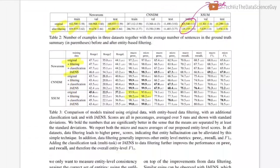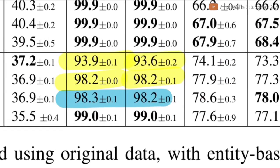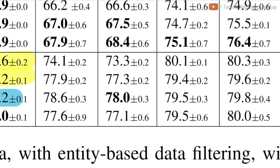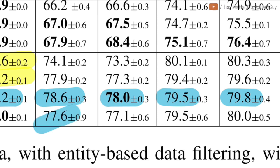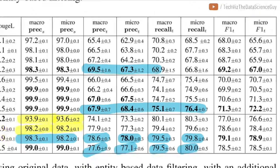Looking at experiments and results for XSum: we already saw original versus filtering results. Applying the classification method (named entity loss) together with filtering shows a further increase in precision for precision_source as well as for precision_target and recall, meaning the extra loss is working in our favor and the encoder learns richer representations. The joint entity generation method does not surpass the classification+filtering results for XSum but performs better on the other datasets, showing improvement over earlier methods.